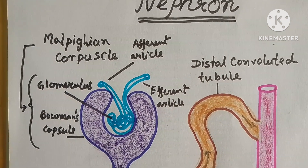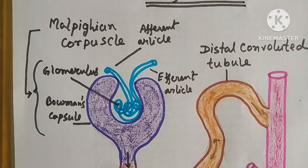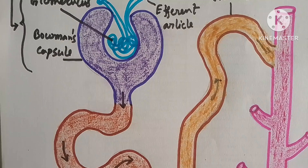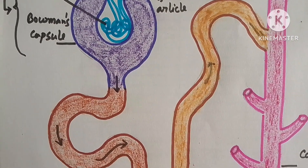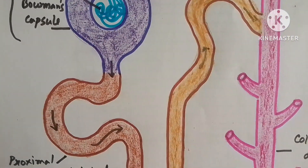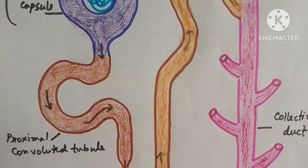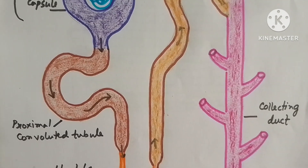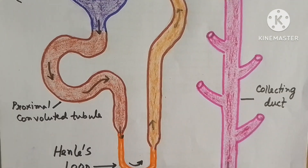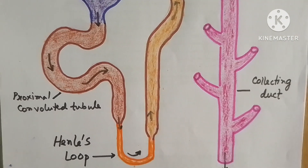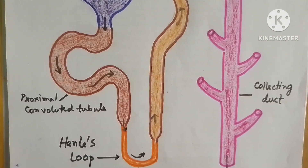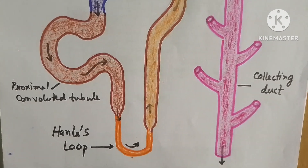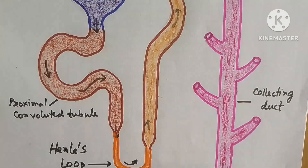My scientific diagram of nephron is ready now. But don't forget to do the labelling of any scientific diagram. I described here an easy process to draw this tough diagram. You can easily draw this in your exam paper to get good marks in biology.